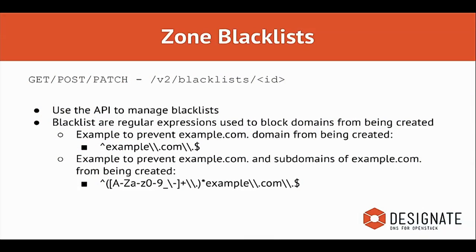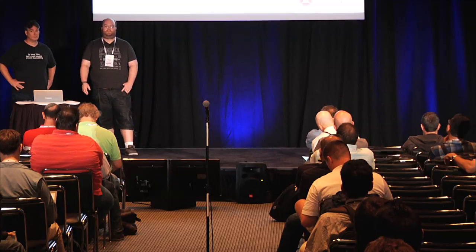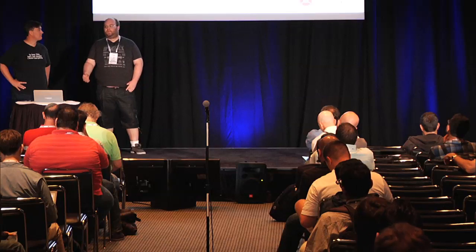We also allow blacklisting zones. A zone blacklist is effectively a regex that runs against every single zone creation request, allowing you to block particular keywords or patterns. For example, in HP Cloud we limit hp.com domains to internal users by running regexes against creation requests. For the blacklists and TLD checks, it's all policy-based, so you can allow support staff or admins to create zones on behalf of customers who have a legitimate business case for overriding the checks.